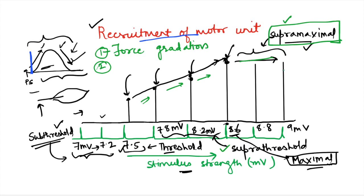Before I end, a question for you — type your answer in the comments below: does this graph violate the all-or-none law? The all-or-none law states that either the response will be maximum or there will be no response at all. Does this graph violate that law? Thanks for watching — if you liked it, press like, share the video, and don't forget to subscribe to the channel Physiology Open.